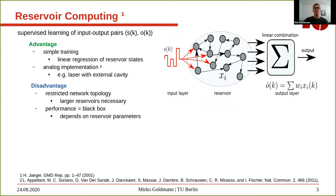The reservoir computing scheme was introduced in 2001 by Herbert Jäger. It is a machine learning method for supervised learning of input and output pairs. The reservoir computing scheme has three main layers: the input layer where we have a pre-processing of the inputs, the reservoir — which can be any extended dynamic system, but mostly networks and delay systems are used — and the output layer given by a readout of the reservoir state.